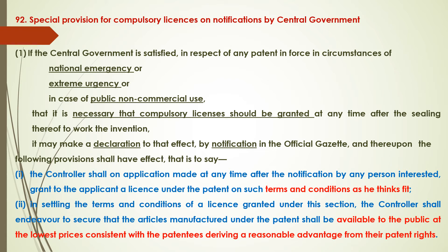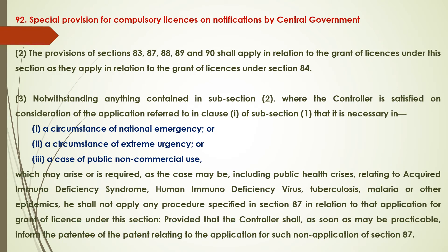Two factors will be kept in mind: number one, terms and conditions will be decided by the controller; number two, both parties will have the advantage — that is, the public will have the patented article at an affordable or lowest price, and the patentee will have reasonable advantage from their patent rights. Section 92, Subsection 2: The provisions of sections 83, 87, 88, 89 and 90 will apply in case of section 92 as well.